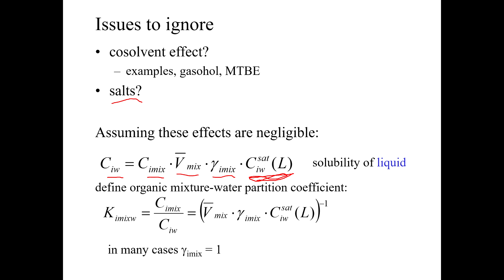And then we're basically reducing it by the fact that first of all, this compound is not 100% of the mixture, it's only a small part of the mixture. And second of all, this chemical does not have ideal behavior in the water. So we're scaling the solubility here. We're scaling it downward.